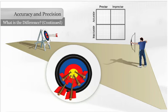This archer is both accurate, he hits the bullseye, and precise. He is able to hit the same area of the bullseye repeatedly.